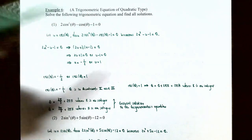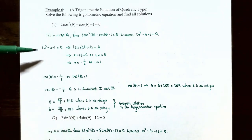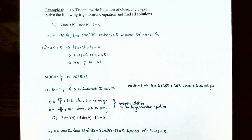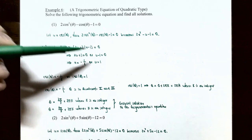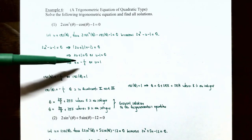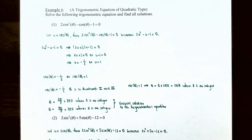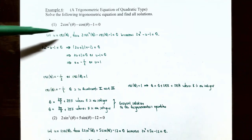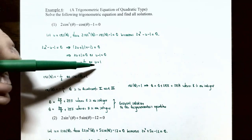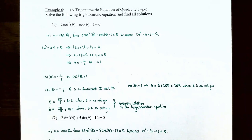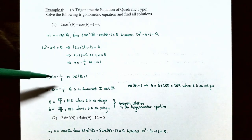Solving the quadratic 2u² − u − 1 = 0 by factoring using the AC method or trial and error: it factors as (2u + 1)(u − 1) = 0. By the zero product property, 2u + 1 = 0 or u − 1 = 0, giving u = −1/2 or u = 1. Since u = cosθ, we now convert back: cosθ = −1/2 or cosθ = 1. These are the trigonometric equations we need to solve for θ.